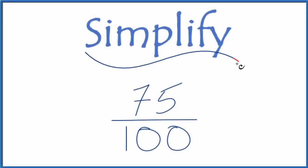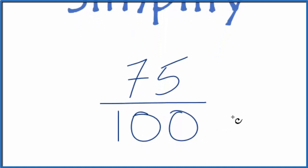All right, let's simplify the fraction 75 over 100. We want to reduce the fraction 75 over 100 to its lowest form.